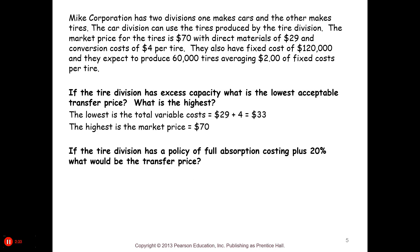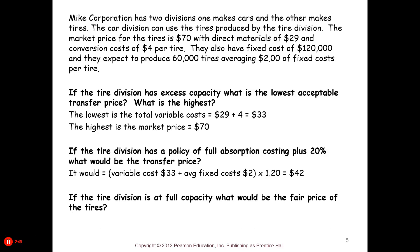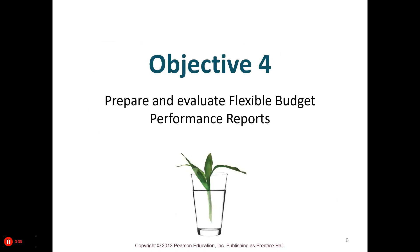If the tire division has a policy of full absorption costing plus 20%, the transfer price would be the variable cost plus the average fixed cost of $2, multiplied by 1.20, which gives $42. If the tire division is at full capacity, the fair price for the tires would be the market price of $70.